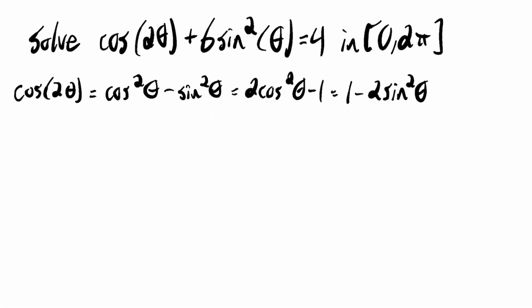So I'm going to go with replacing this term using this identity. So I'm going to have 1 minus 2 sine squared theta plus 6 sine squared theta equals 4.